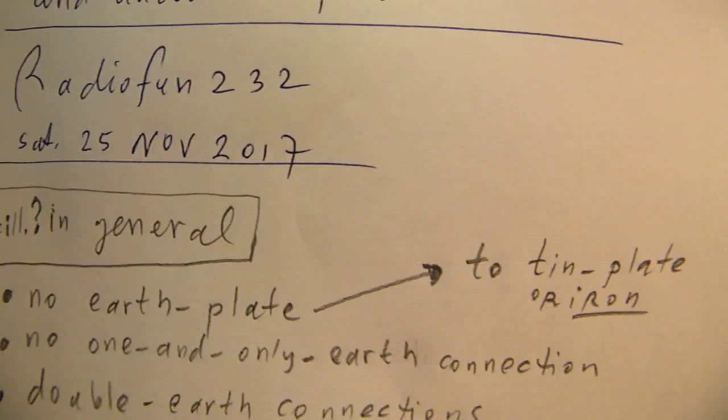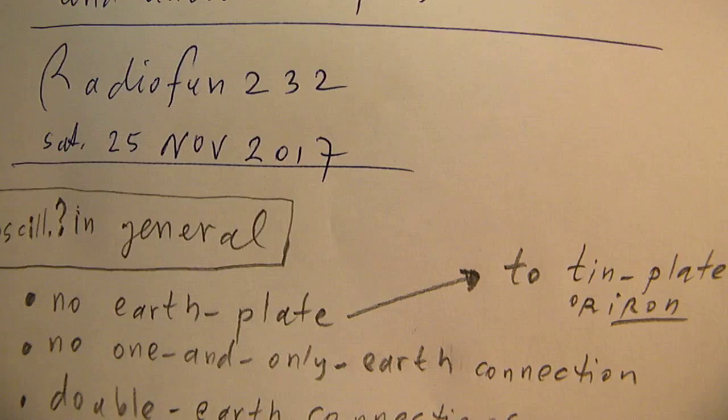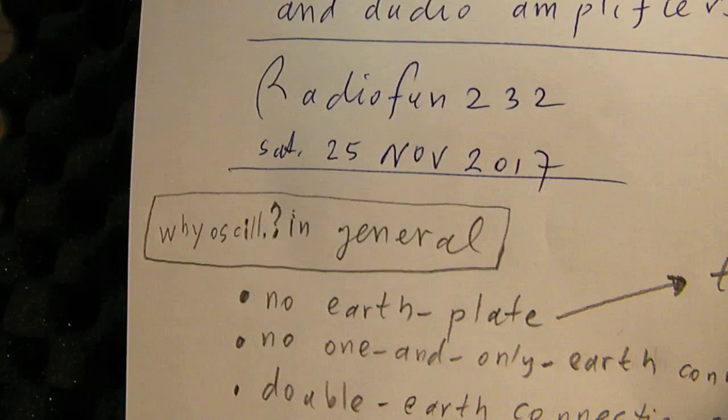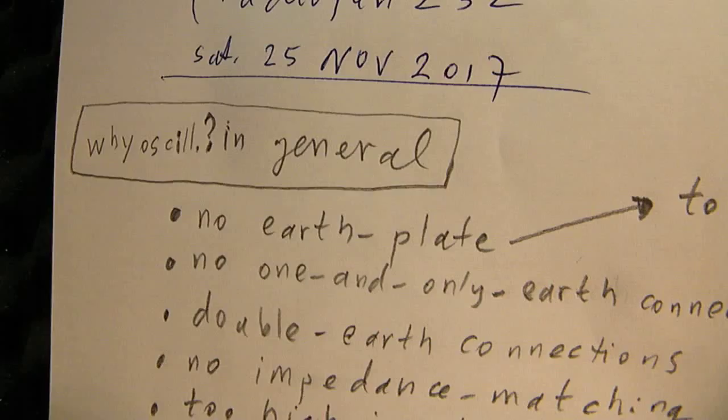In professional electronic circuits, you will always see that iron is used, an iron box. So no earth plate is a problem. Could be that such a situation leads to oscillations.